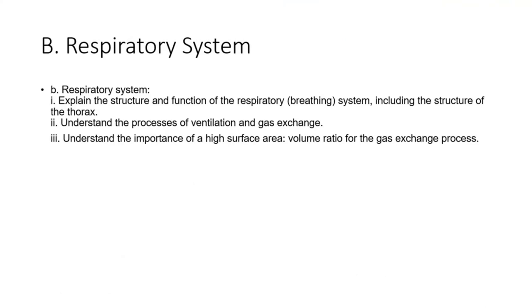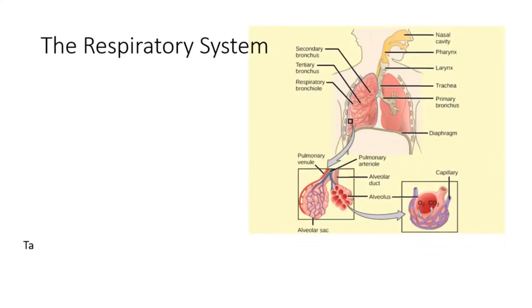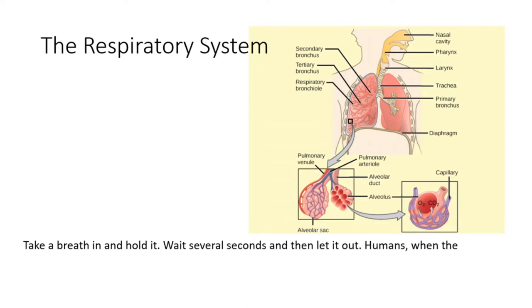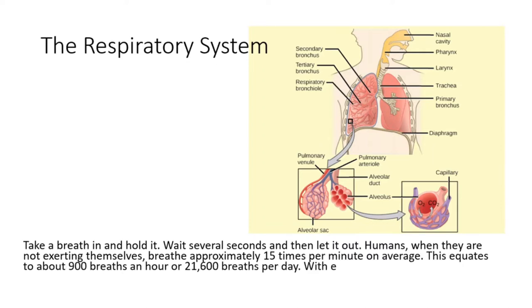Now let us move on to the respiratory system. Take a breath in and hold it. Wait several seconds and then let it out. Humans, when they are not exerting themselves, breathe approximately 15 times per minute on average. This equates to about 900 breaths an hour or 21,600 breaths per day.